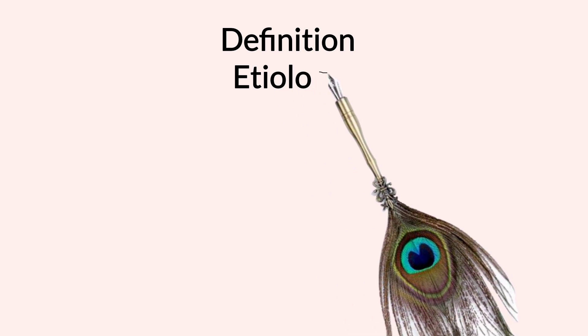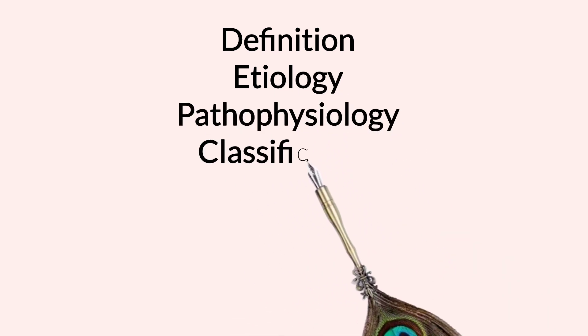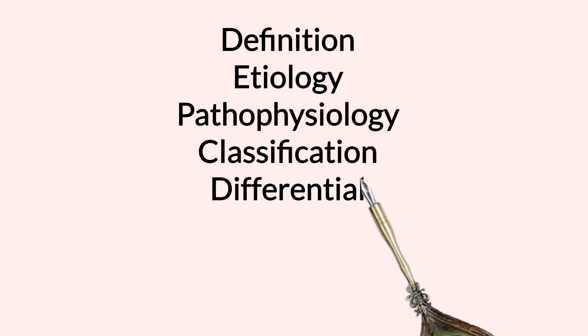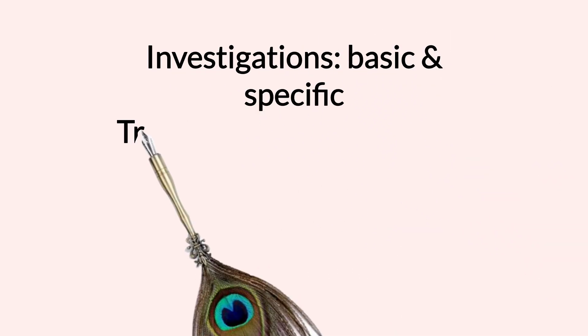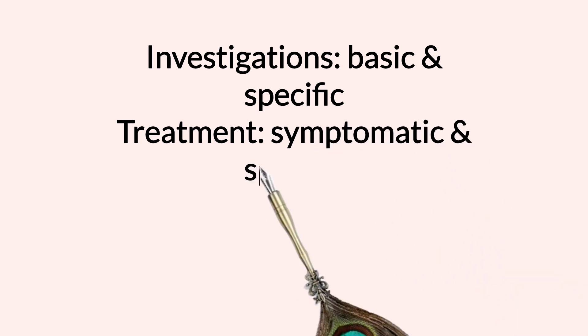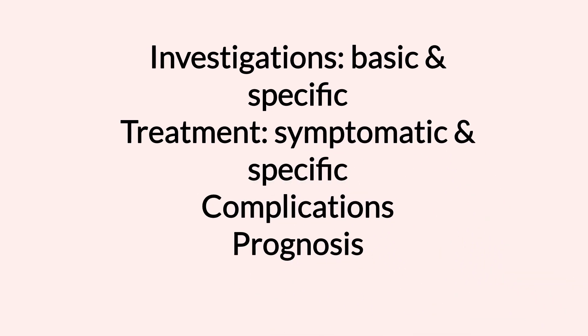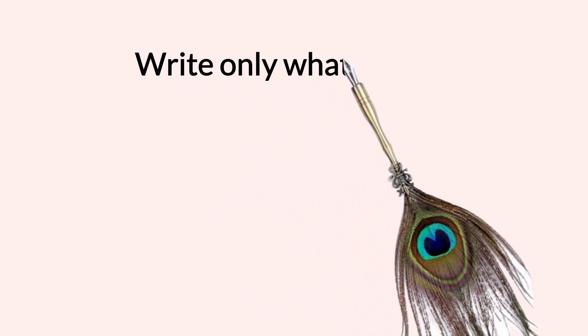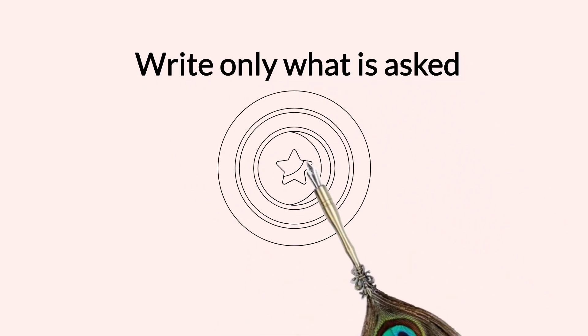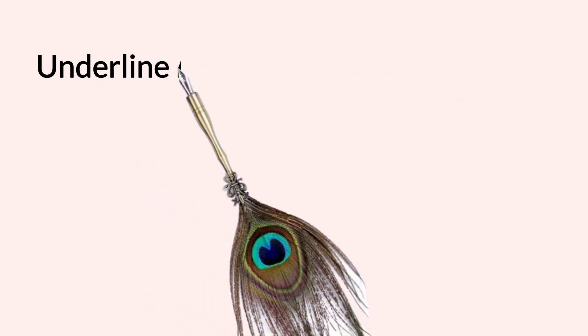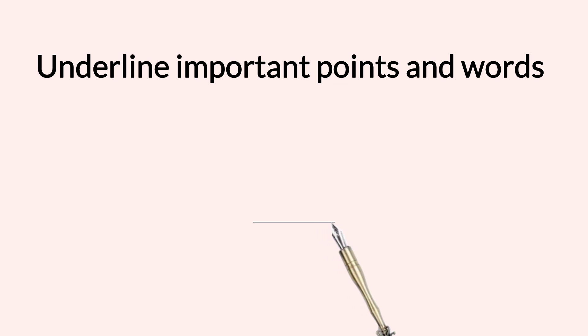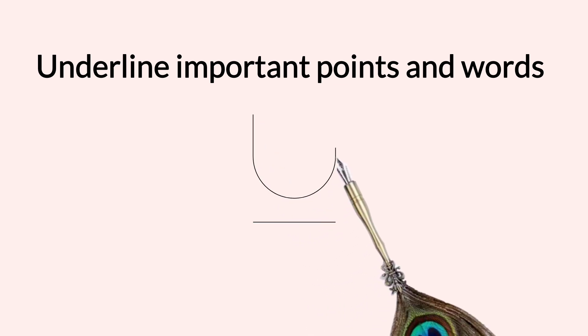If you get a short note on any clinical topic, write subheadings like Definition, Etiology, Pathophysiology, Classification, Differential Diagnosis, Clinical Features, Symptoms and Signs, Investigations — Basic and Specific, Treatment — Symptomatic and Specific, Complications and Prognosis. When a specific question is asked, for example Pathophysiology or Complications, then write only that much. It is very important to underline important subheadings, points and words, especially those words which are specific for the topic and you are confident they are correct — this will highlight them.